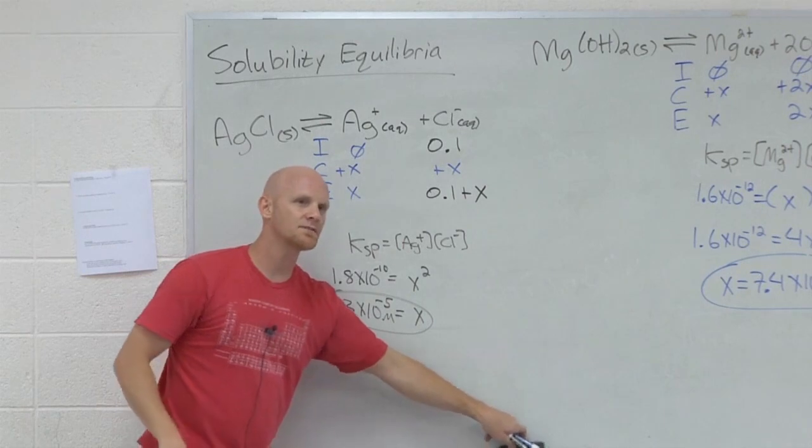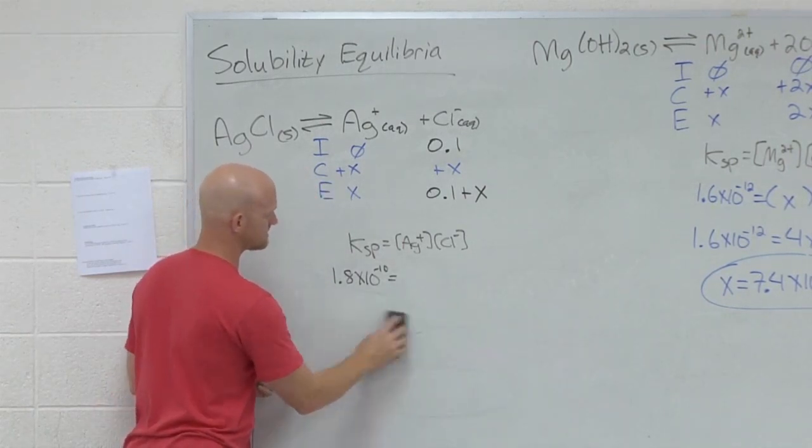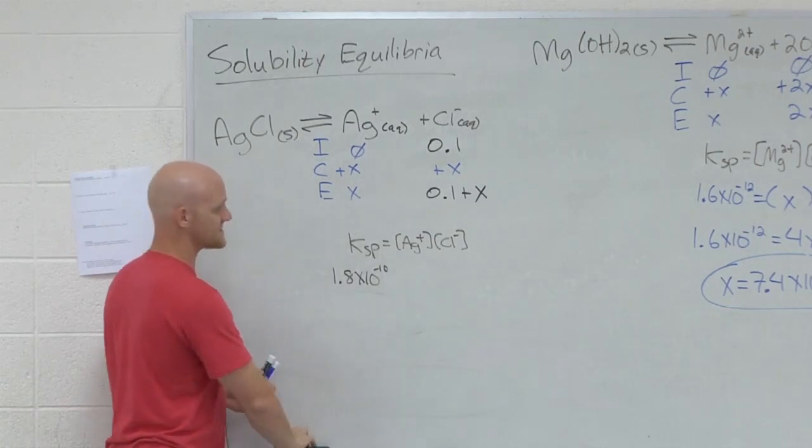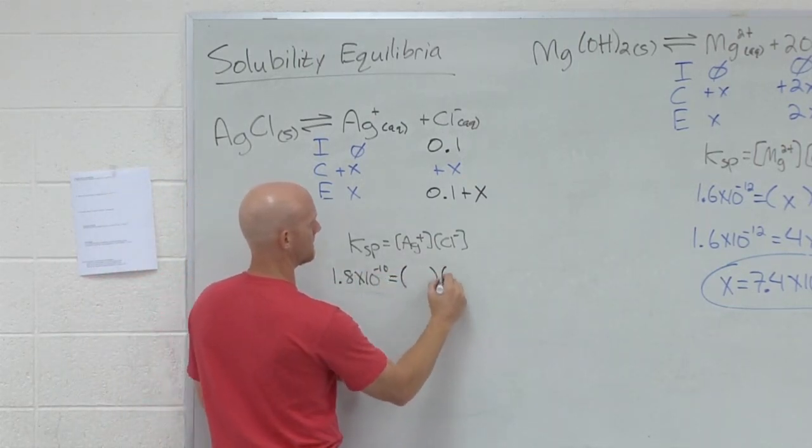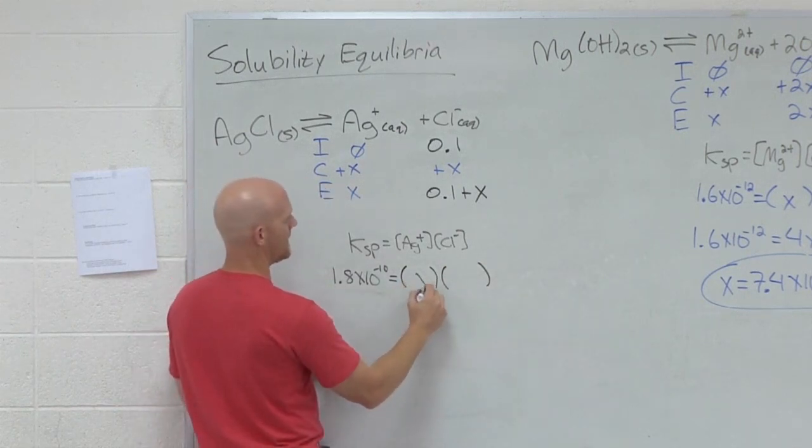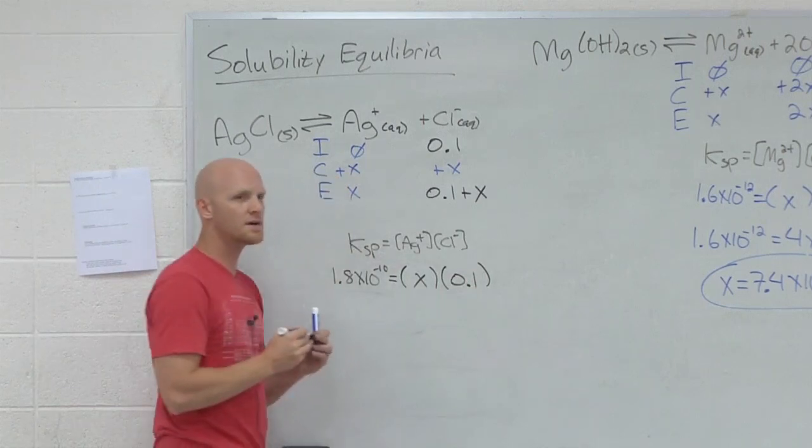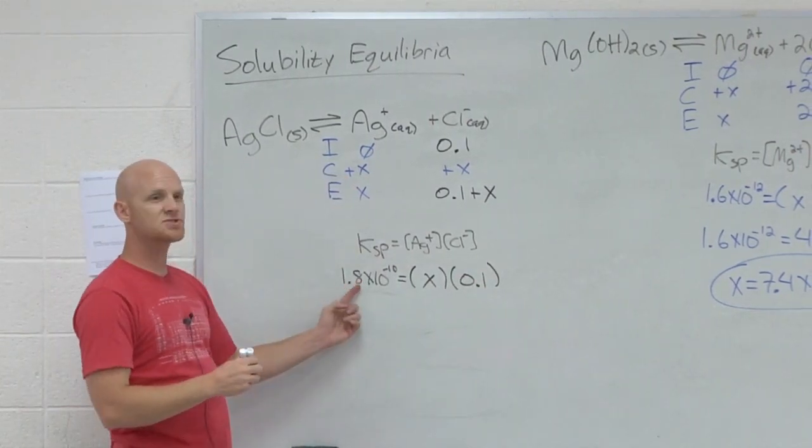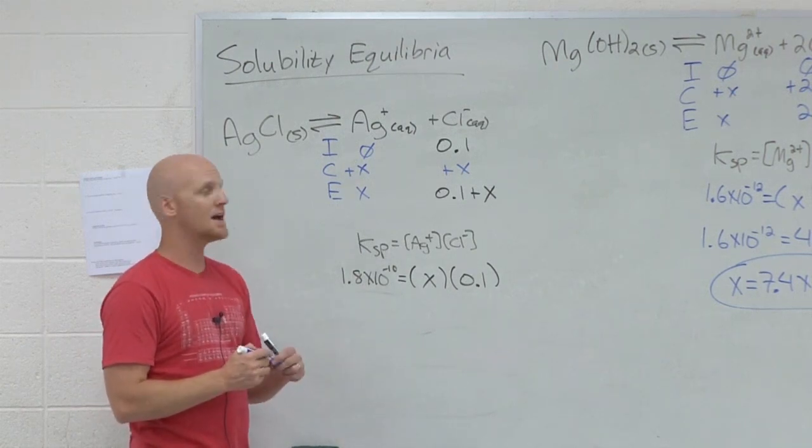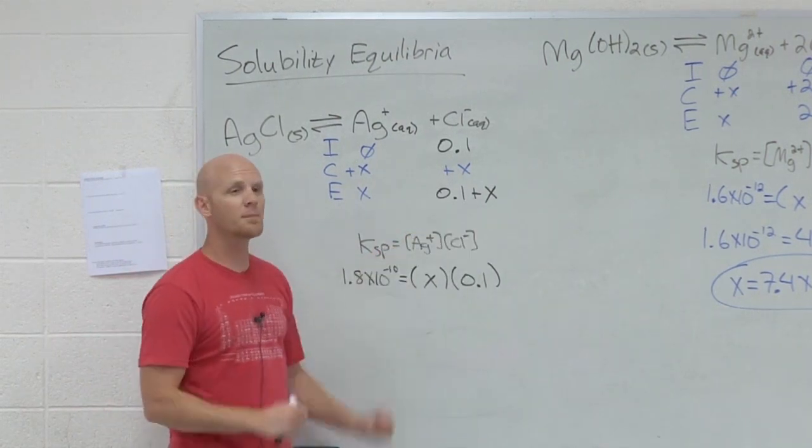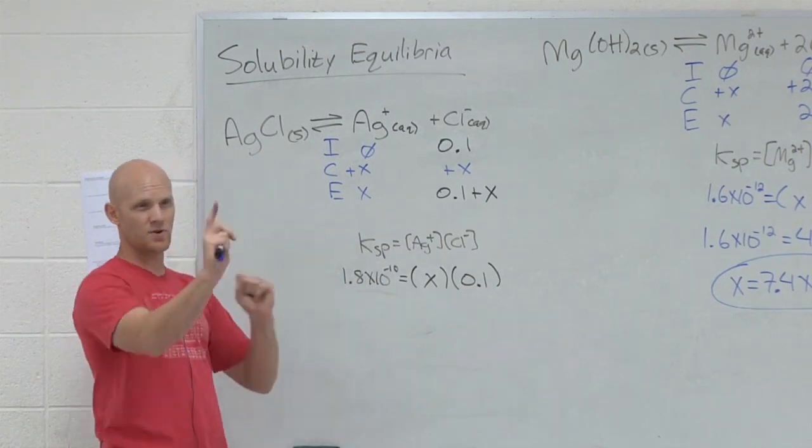And so when I go back to solve my solution here, it's not just X squared anymore. The KSP hasn't changed, but what actually gets plugged in here? X and 0.1 plus X. Turns out we're going to ignore the plus X because the KSP is so small, we should expect X to be small. And 0.1 plus a really small number is still 0.1. And so it actually makes the solution a little bit easier.